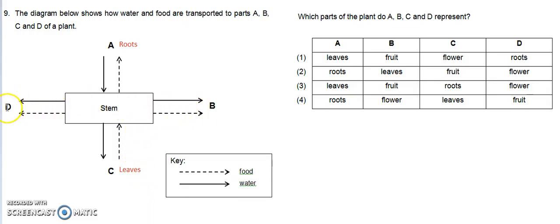B and D can be any other parts of the plant apart from the roots, leaves, and stem. Let's check the options. For A, it must be roots, so the only options left are 2 and 4.